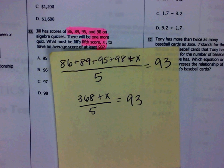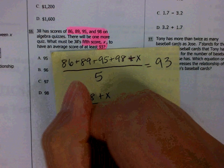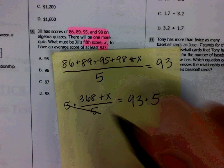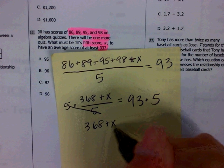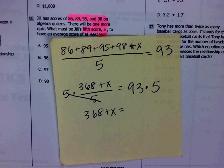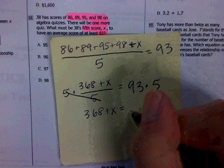Now this is a multi-step problem. The first thing that you want to do is get rid of that divided by 5, so you're going to multiply both sides by 5. You don't touch the numerator, so you're going to rewrite 368 plus X. 93 times 5 is 465.